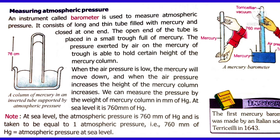A barometer is a long glass tube filled with mercury and closed at one end. The open end of the tube is placed in a small trough containing mercury. The pressure exerted by air on the mercury in the trough holds a certain height of the mercury column. When pressure over the liquid is low, the mercury level in the tube falls down. When air pressure is more on the surface of the liquid, it pushes the mercury up inside the tube, so the level of the mercury column in the tube increases. This reading shows the air pressure.